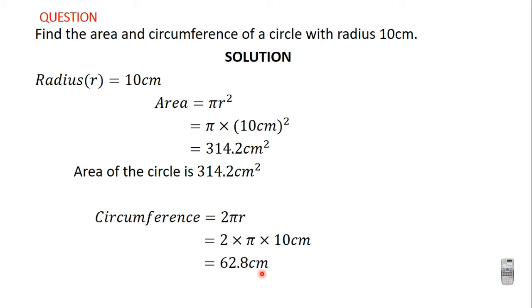We are not told the number of decimal places, so I'll leave my answer in one decimal place, which is 62.8 centimeters. So the area is 314.2 centimeters squared and the circumference is 62.8 centimeters.